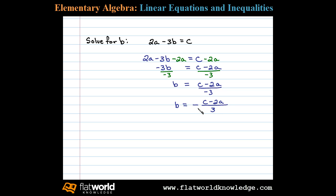But that's not what we see in the textbook. In the textbook we go a little further and actually distribute the negative into the numerator. When we do that we'll be left with negative c plus 2a over 3.